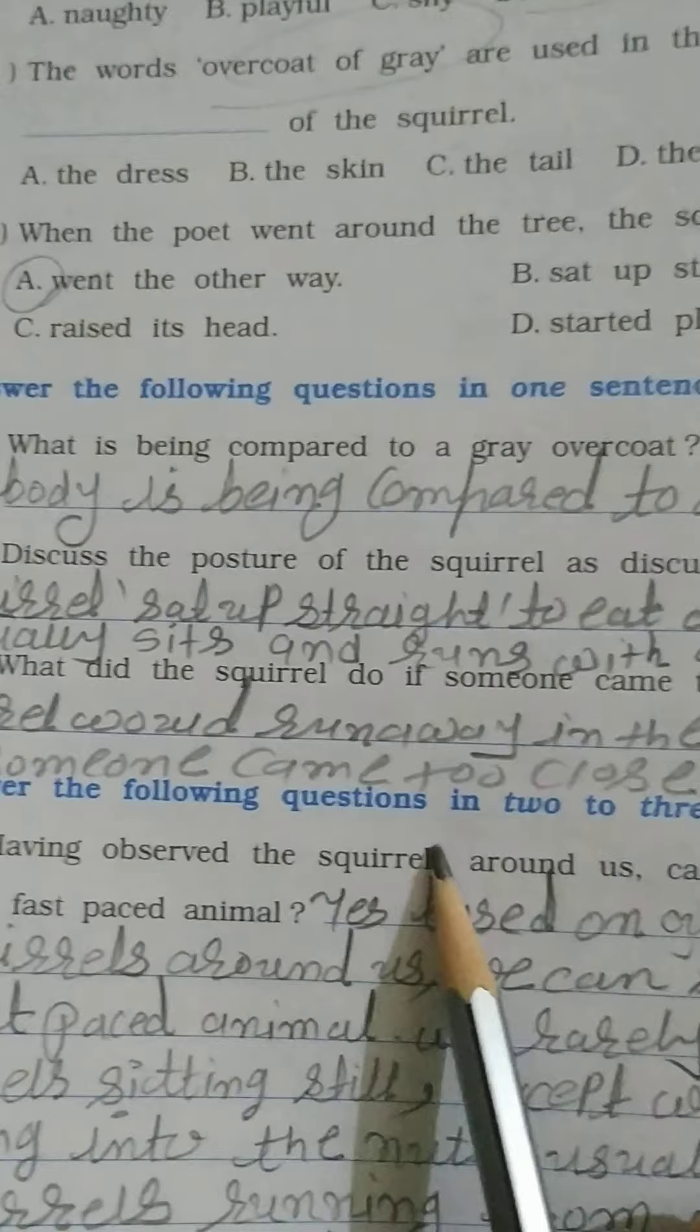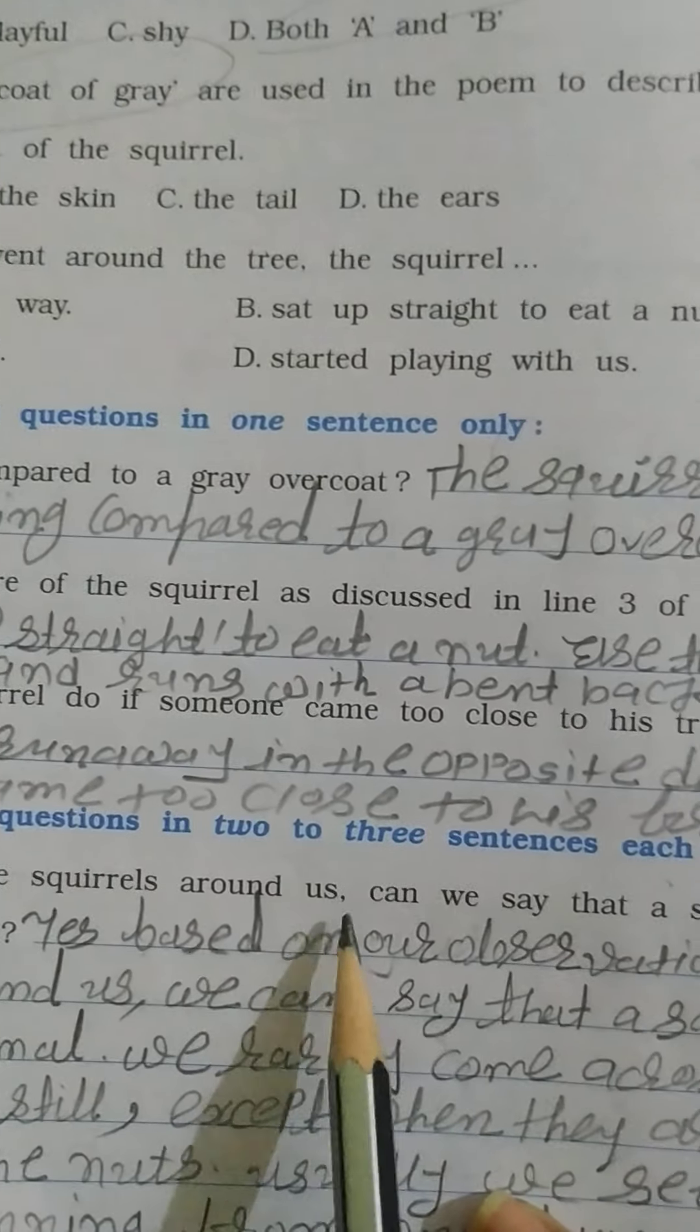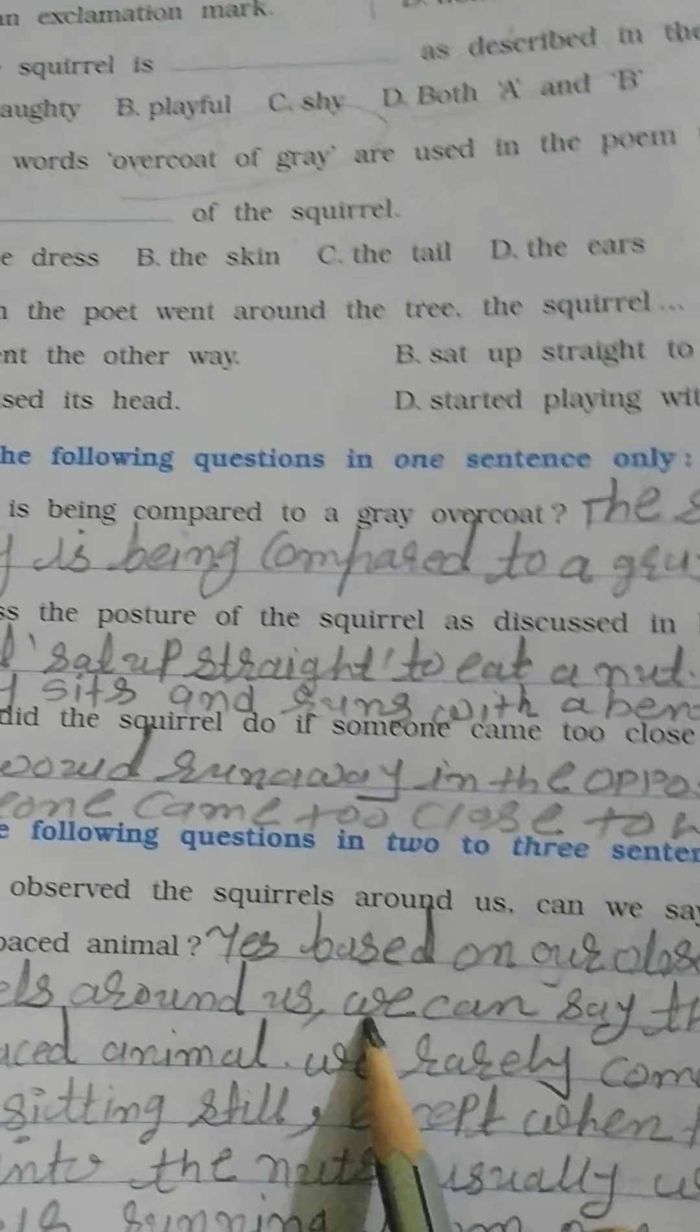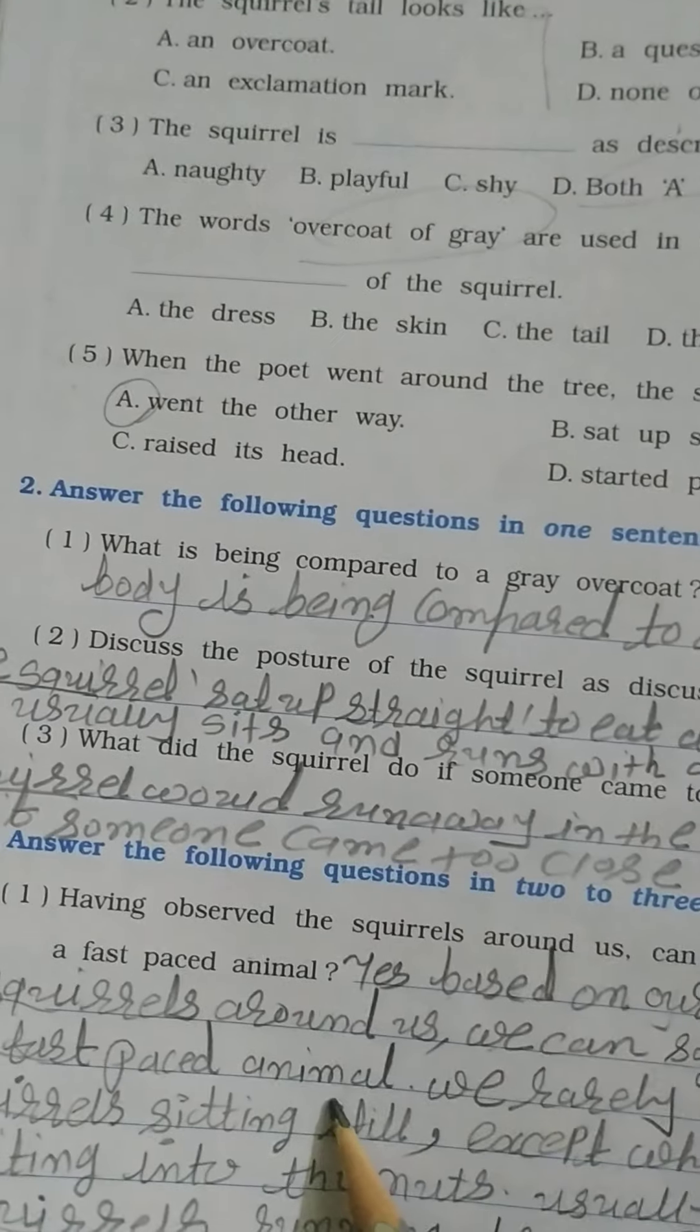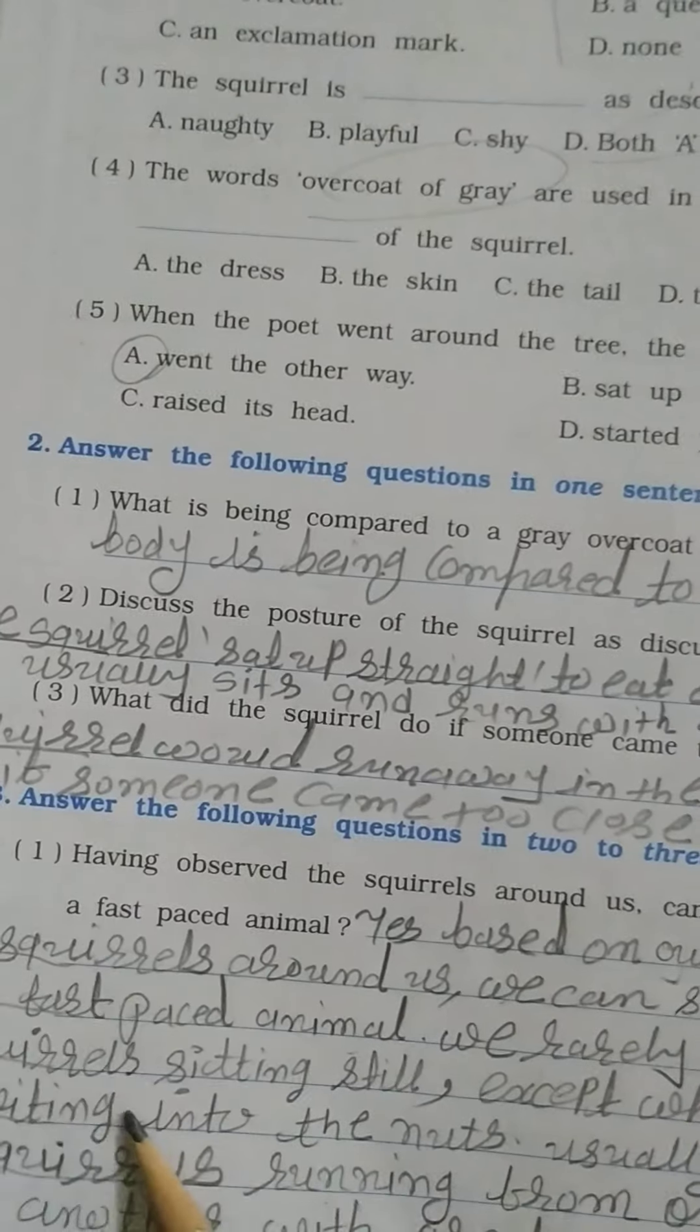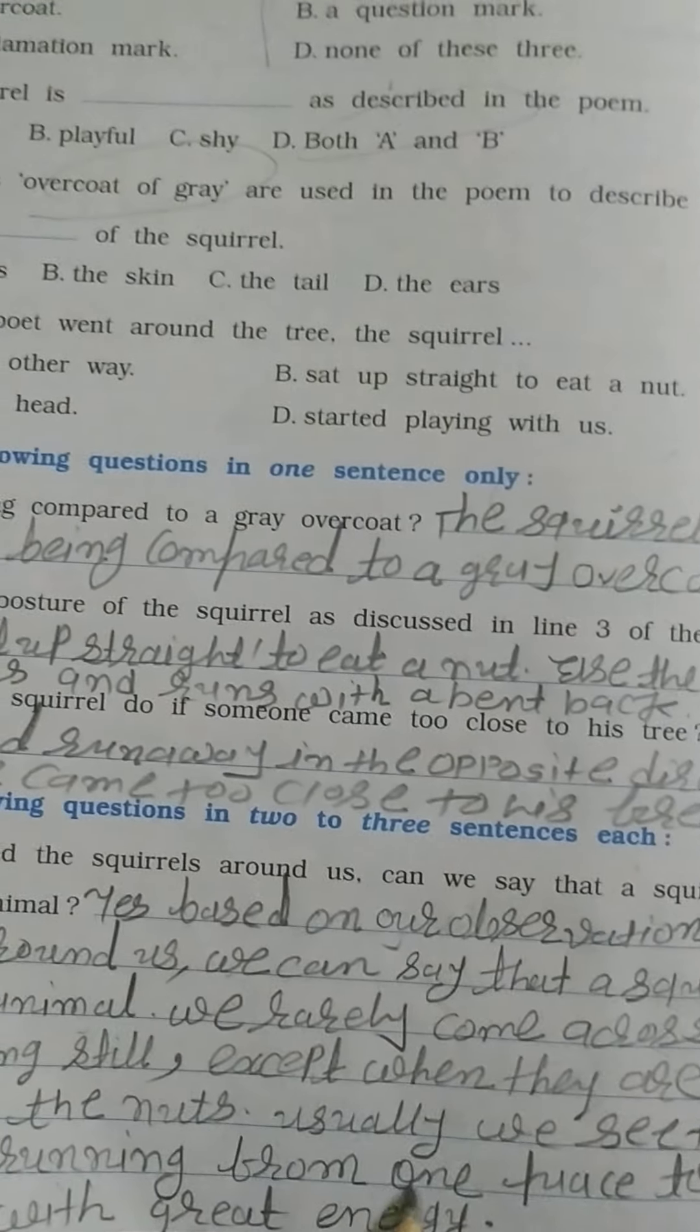Answer the following questions in two to three sentences each. Having observed the squirrels around us, can we say that a squirrel is a fast-paced animal? We rarely come across squirrels sitting still except when they are biting into nuts. Usually we see the squirrel running from one place to another with great energy.